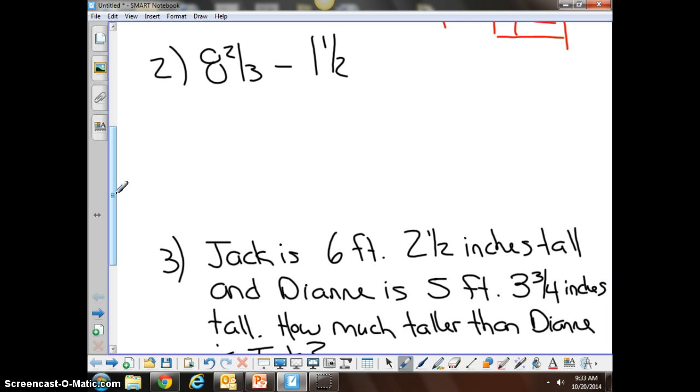We've got 8 and 2/3rds, we're going to convert that to an improper. 8 times 3 is 24, plus 2 is 26, we've got 26/3rds. We're going to continue to subtract. 1 and 1/2 is converted into an improper, which is 3/2.